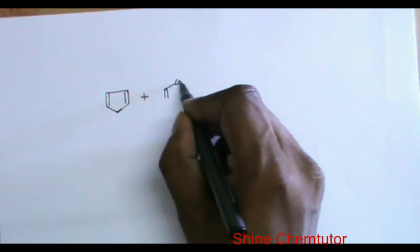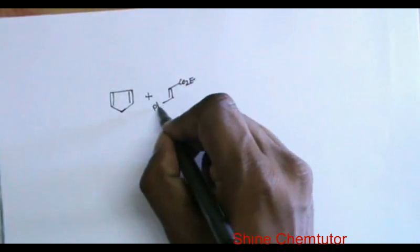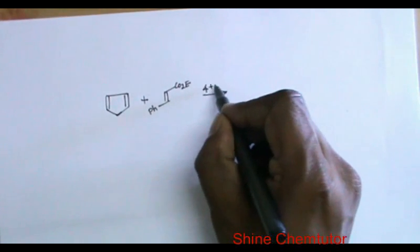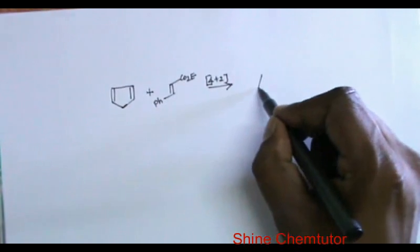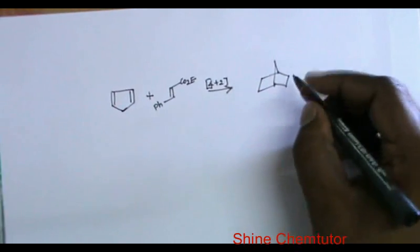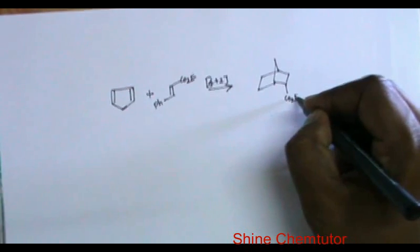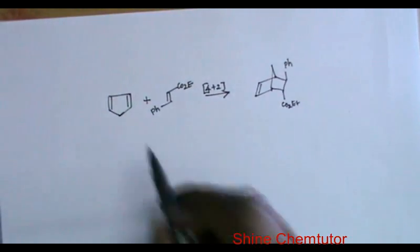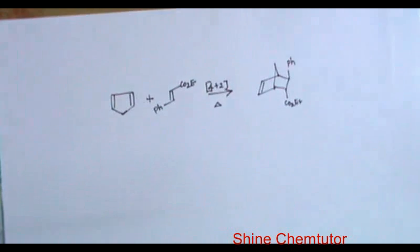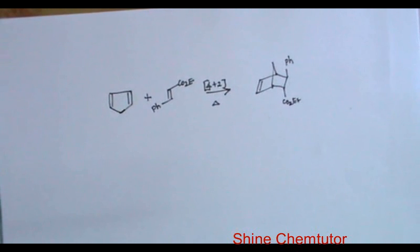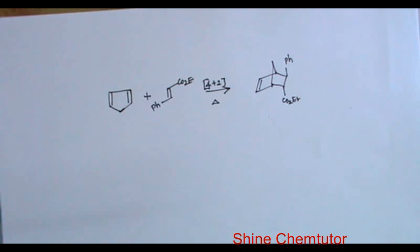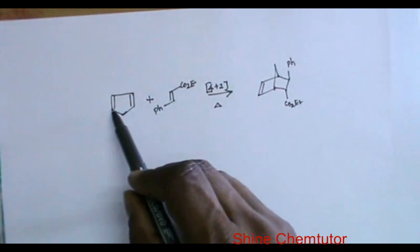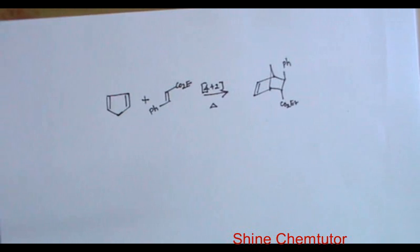I treat cyclopentadiene with ethyl cinnamate. It undergoes 4+2 cycloaddition — basically it is a Lewis acid catalyzed Diels-Alder reaction. This 4+2 is more favored under thermal condition, but if you add Lewis acid, that can also promote it. The Lewis acid can coordinate to the ester, and because of that, this double bond will attack here and the reaction will proceed.